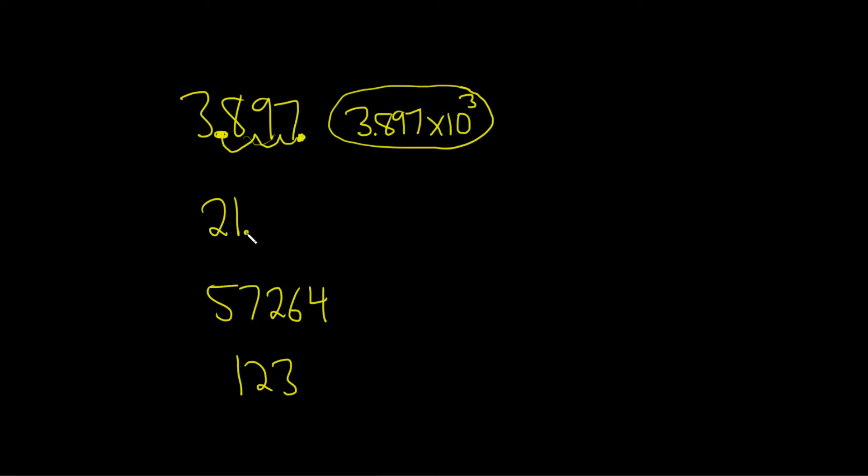Let's do this one. 21. So we always start here. So 1, that's it. So this will be 2.1 times 10 to the 1. We stop there.